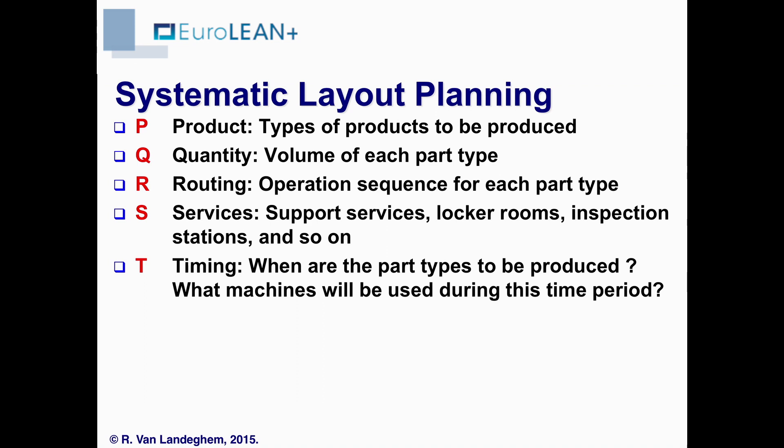The acronym stands for: the product — types of products; the quantity of each part; the routing, which means the operation sequence for each part throughout the machines; special services needed, which will determine which additional rooms and areas we need to provide in the layout. And sometimes timing is also important — if you have a shift operation or very seasonal demand, it can be interesting to look at when we use which machine.